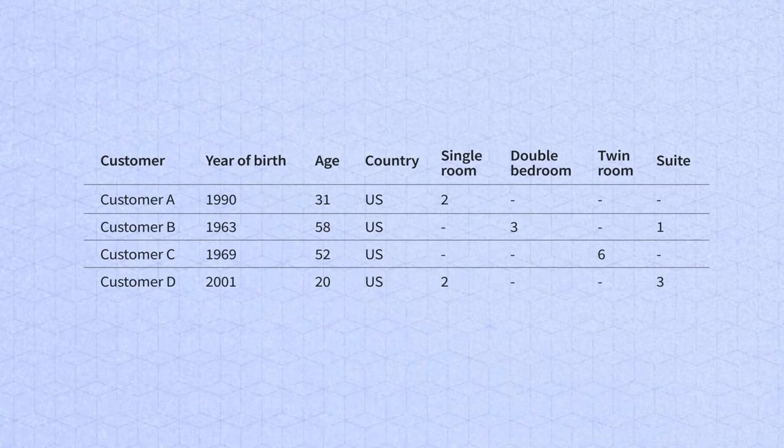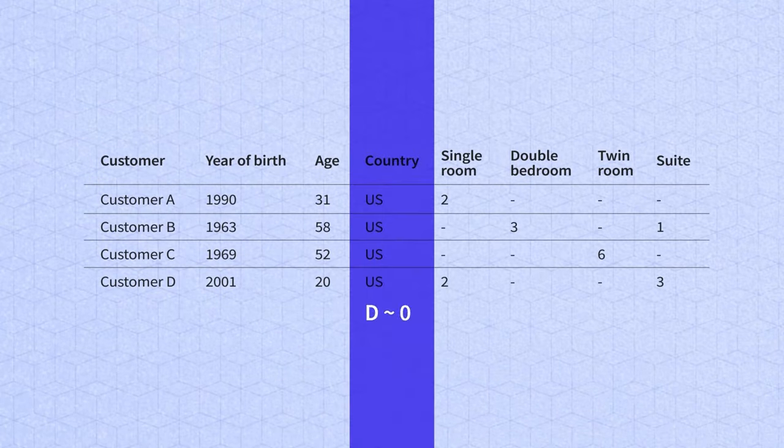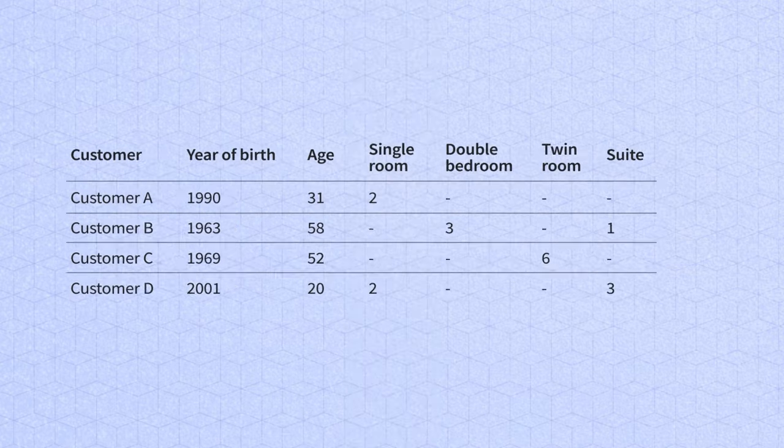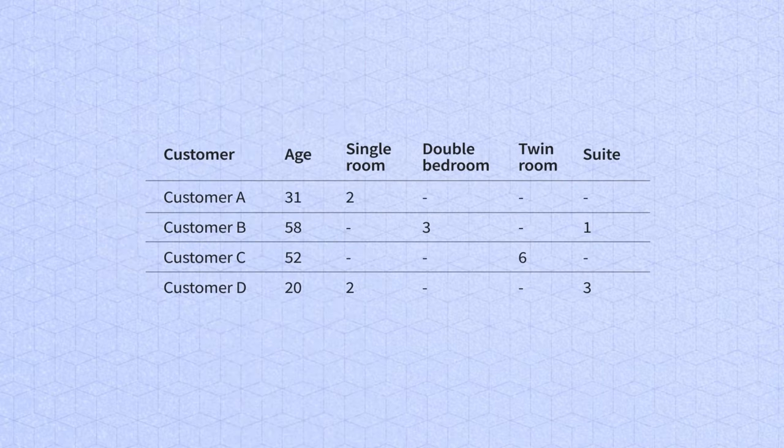For example, you can completely remove features that have zero or close to zero variance. Like in the case of the country feature in our table. Since all customers come from the US, the presence of this feature won't make much impact on the prediction accuracy. There's also redundant data, like the year of birth feature, as it presents the same info as the age variable. Why use both if it's basically a duplicate?